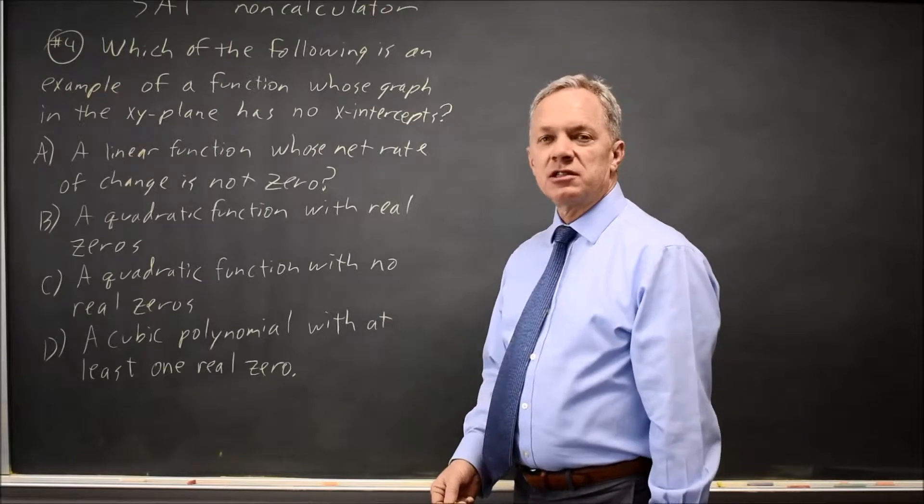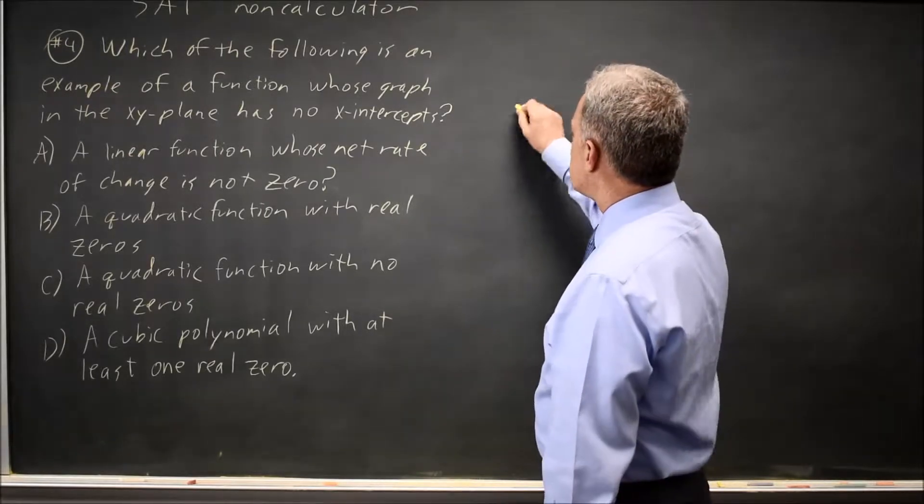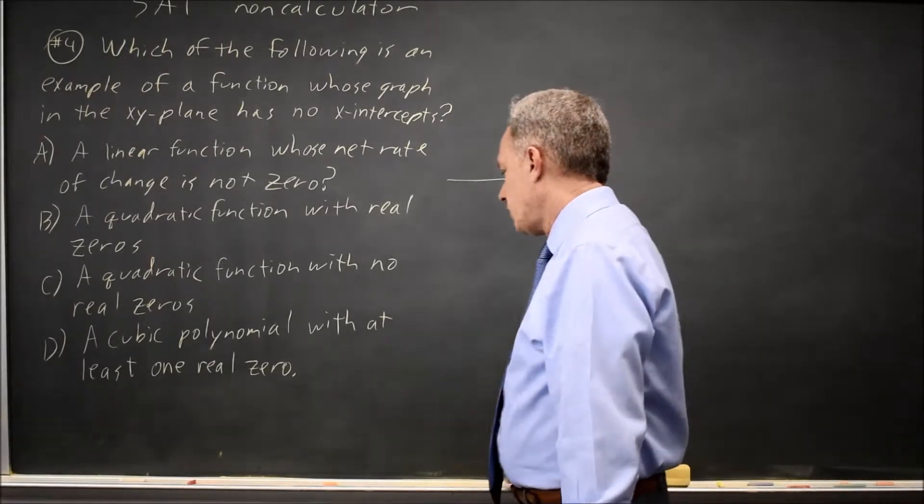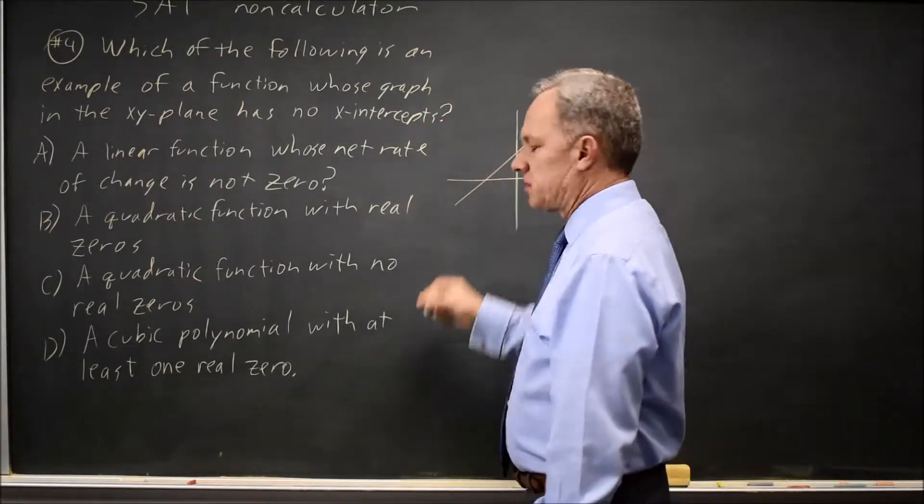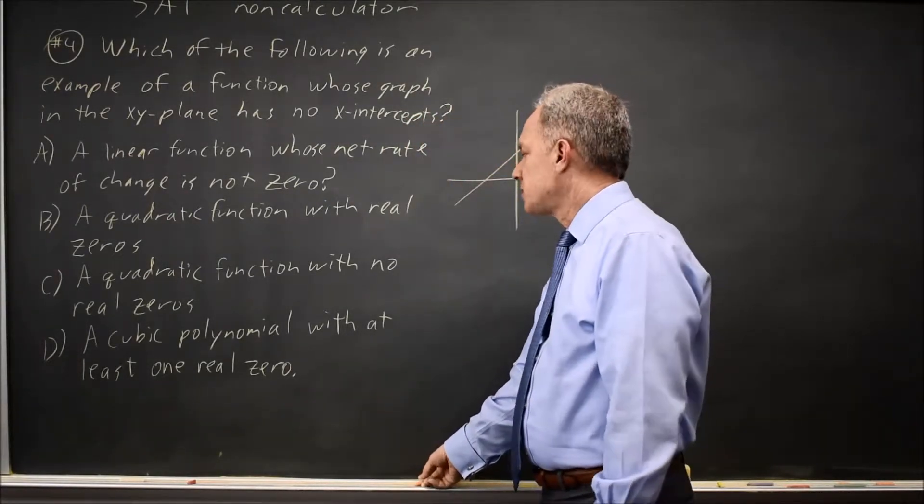Choice A is a linear function whose rate of change is not zero. The rate of change is the slope. If you have a linear function with non-zero slope, it has to go through the x-axis, so that does not work.